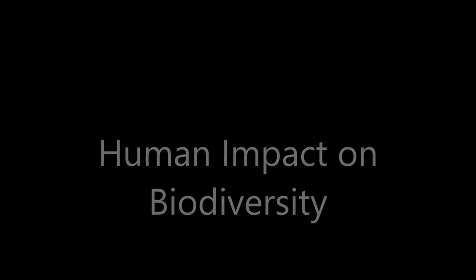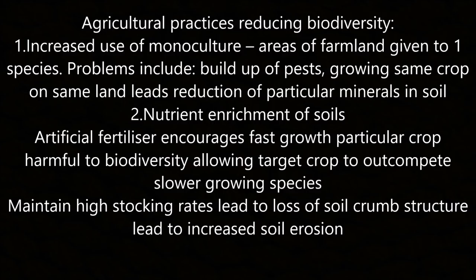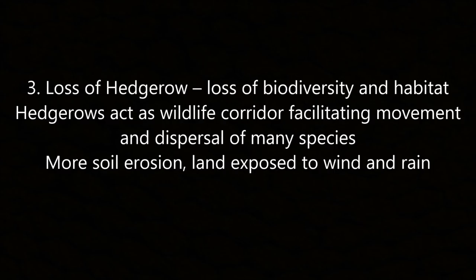Our final topic is human impact on biodiversity. Agricultural practices reducing biodiversity: (1) Increased monoculture — areas of farmland are given over to one species, leading to build-up of pests and reduction of particular minerals in the soil. (2) Nutrient enrichment of soils — artificial fertilisers encourage fast growth of a particular crop but harm biodiversity, allowing that crop to outcompete slower-growing species. High stocking rates lead to loss of soil crumb structure and increased soil erosion.